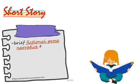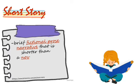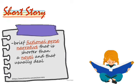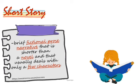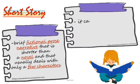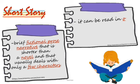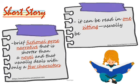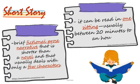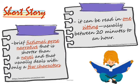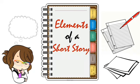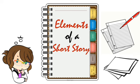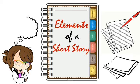Let us start with defining a short story. It is a brief fictional prose narrative that is shorter than a novel, usually deals with only a few characters, and can be read in one sitting — usually between 20 minutes to an hour. There are six elements of a short story and we will discuss them one by one.